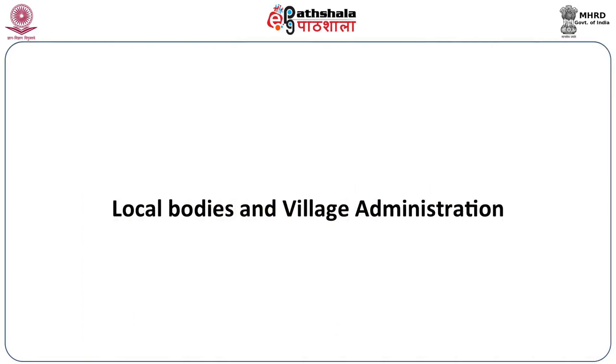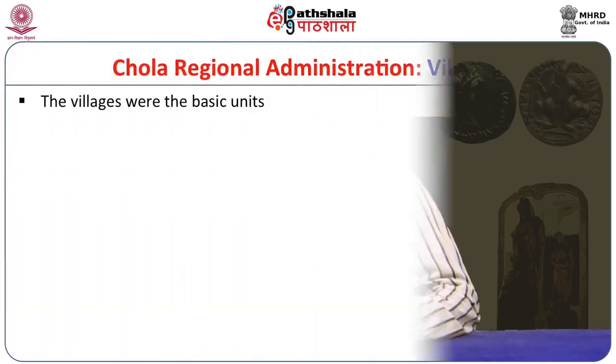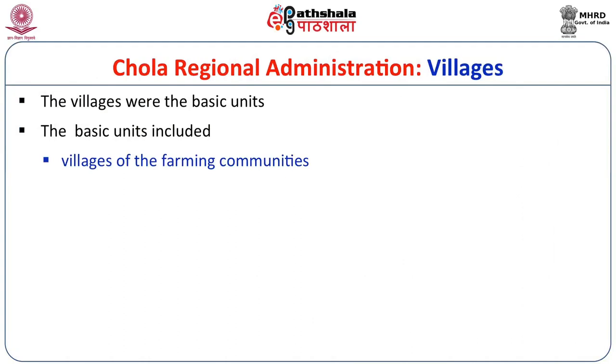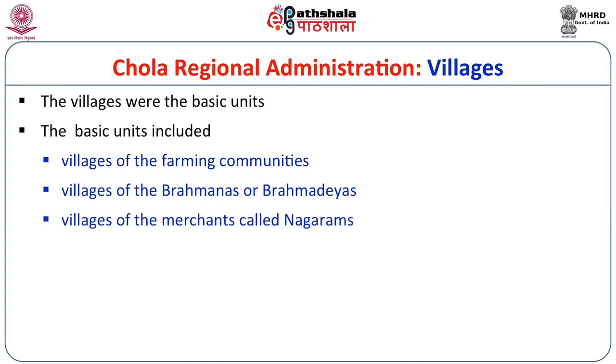The next component is local bodies and village administration. Moving from Mandalam, to Valanadu, to Nadu, we now come to the grassroots level. Villages formed the basic unit of settlement in the Chola period. The basic units included villages of farming communities known as Vellanvahai, their service providers in nearby settlements called Cheris, and villages of Brahmanas living in exclusive areas with separate names like Chaturvedi Mangalam. We also have Brahmadeyas — land given to Brahmins which they managed — and villages of merchants called Nagarams, which were commercial quarters where Chettiars and other trading communities operated.